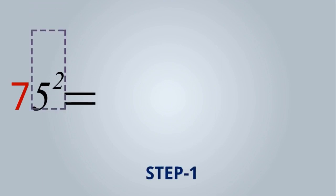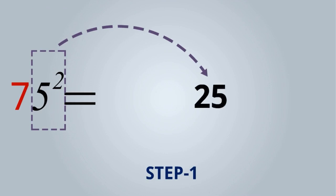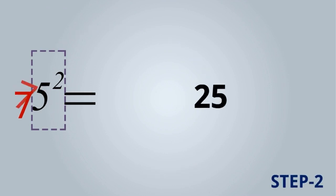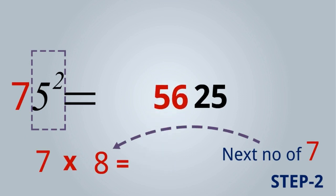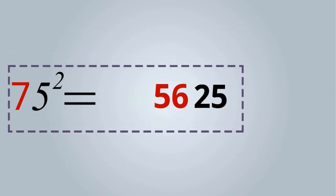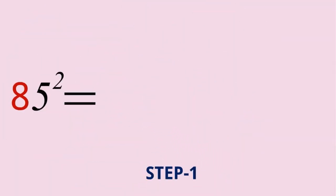One more example: 75 squared. Step one: 5 squared, we write 25 here. Step two: 7 is here and the next number of 7 is 8. We multiply 7 and 8: 7 multiplied by 8 is equal to 56, and this 56 will be moved here. So it becomes 5625. 75 squared is equal to 5625.